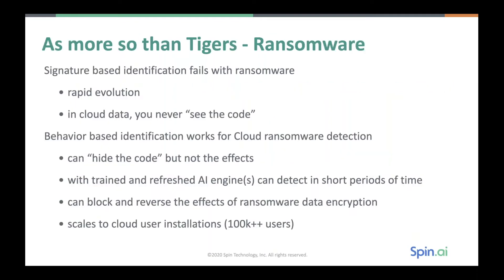As with tigers, so more so with ransomware — except tigers aren't evolving very fast. Signature-based identification is failing with ransomware for two reasons. One is rapid evolution. The other is that if you've cloudified your data, you never see the code. You don't get a signature of an app — all you get is the behaviors, because the app is outside of anything you can see. It may be attacking through a cloud API, so you never see any code to put a signature on. Signature-based identification will always fail with ransomware in cloud environments.